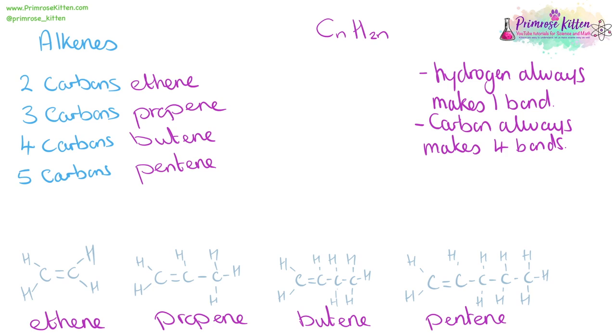You need to know how to name, recognize, and draw the first four alkenes. The formulas of these for ethene, C2H4, propene, C3H6, butene, C4H8, pentene, C5H10.